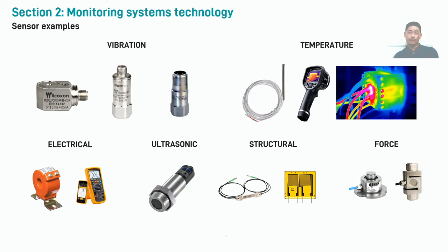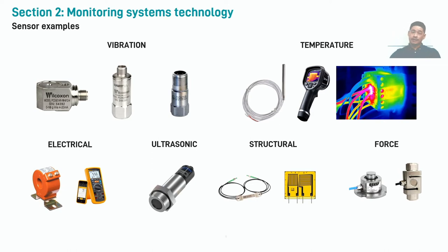Measuring vibration is a common method of determining the condition of rotating machinery, and typical vibration sensors include accelerometers, velocity and displacement transducers. Temperature changes are often used as an indicator of varying equipment condition, and temperature can be measured directly with thermocouples, or more commonly these days with thermal imaging cameras. Thermal cameras are regularly used to detect faults in electrical equipment and wiring within equipment cabinets. We've also listed some other common sensors used in a condition monitoring system, including strain gauges, ultrasonic sensors, and load cells.